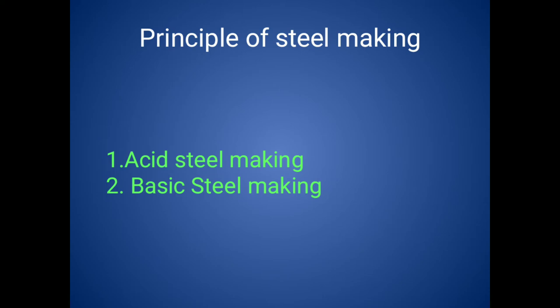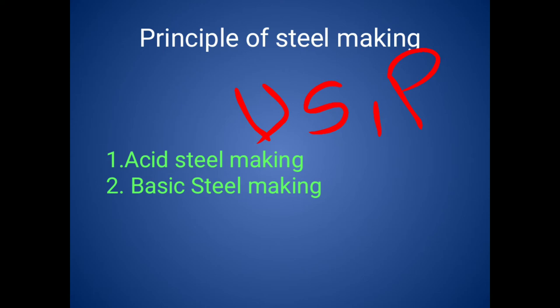The type of process also depends upon the raw material. If the pig iron is low in sulfur as well as phosphorus, we go for acid steel making — that is the main requirement. To use acid steel making to manufacture steel, the pig iron should have low sulfur and low phosphorus. The slag produced in acid steel making has an acid nature, and the furnace lining also uses acid refractory material.